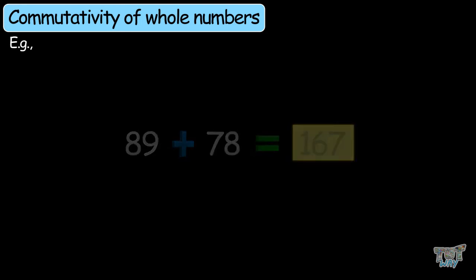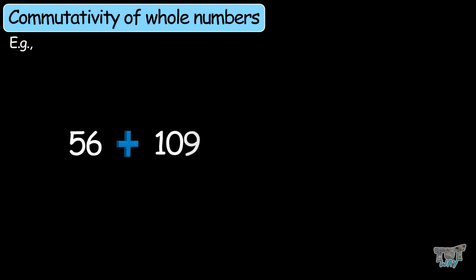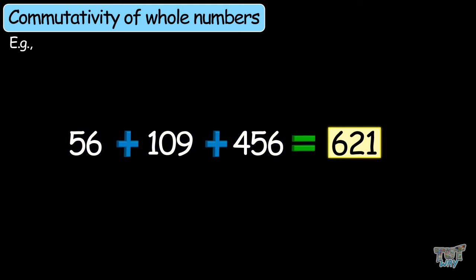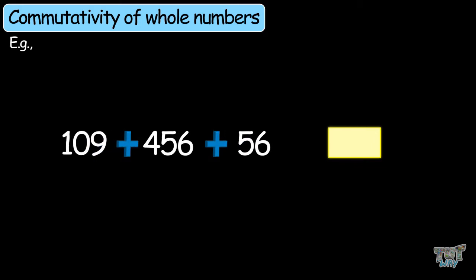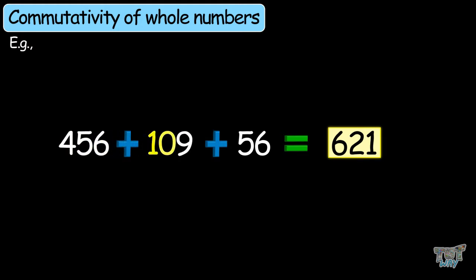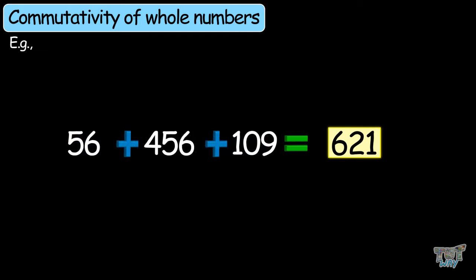Here we have another example: 56 plus 109 plus 456. Add them and see the answer — the answer is 621. Now move these numbers in any order, like 109 plus 456 plus 56. Check the answer — again it is 621. Again move the numbers in any order: 556 plus 109 plus 56 — still equals 621. So we can move the numbers, or we can add them in any order, and the answer remains the same.